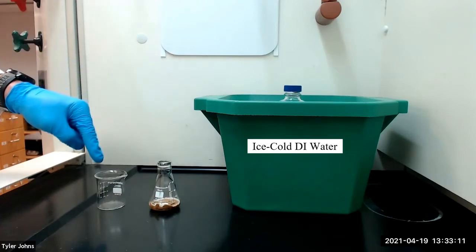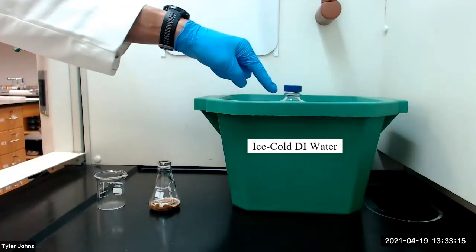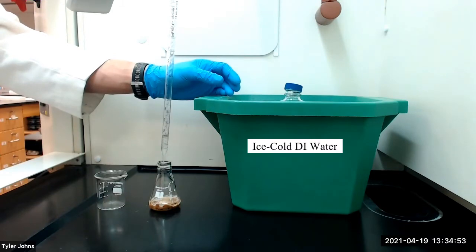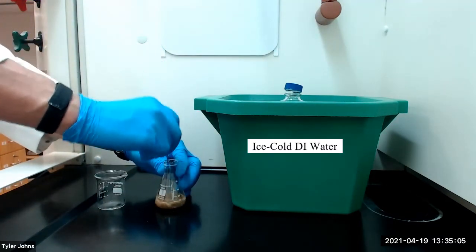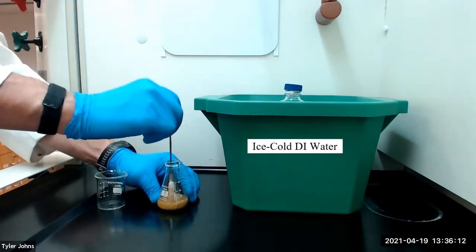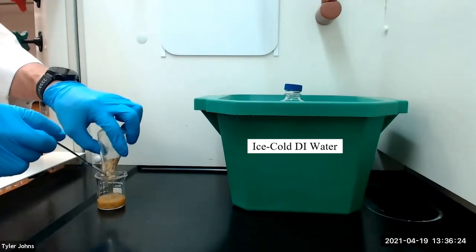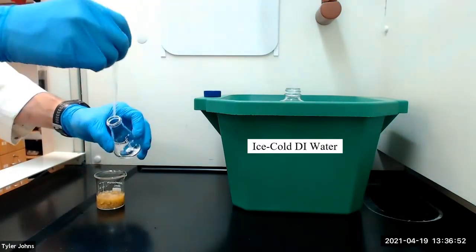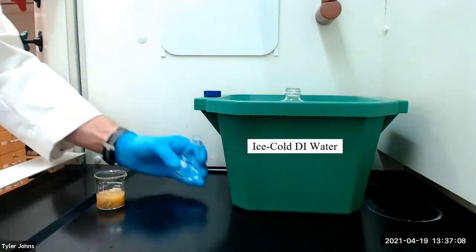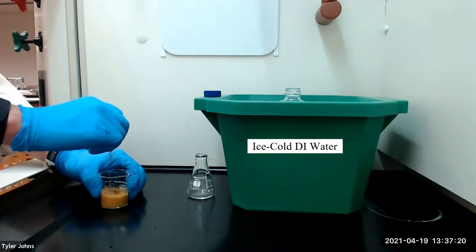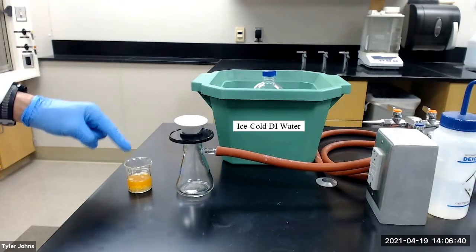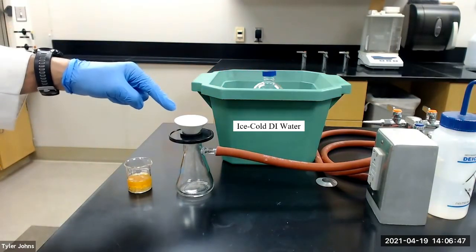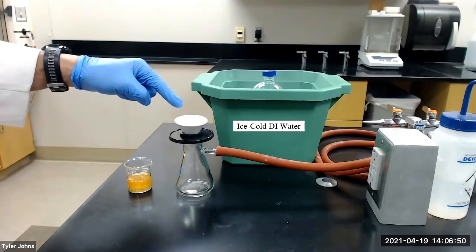We will then transfer the mixture to a small beaker using an additional 5 milliliters of ice-cold water. We will then stir the precipitate to break it up. We will next collect the crude product by vacuum filtration with a Hirsch funnel and use ice-cold deionized water to aid in the transfer and the washing of the product. We will then air dry the crude product for 30 minutes.